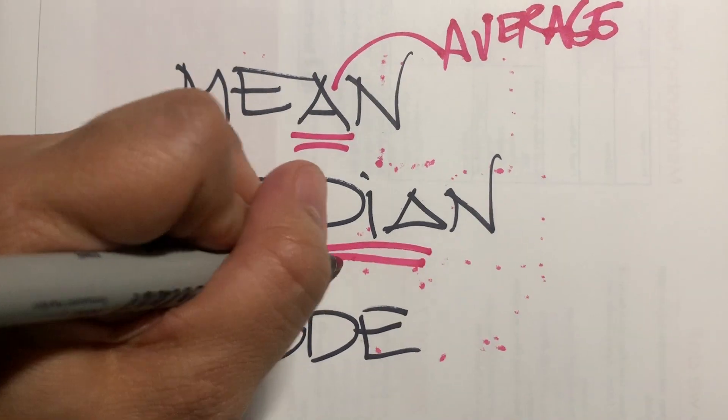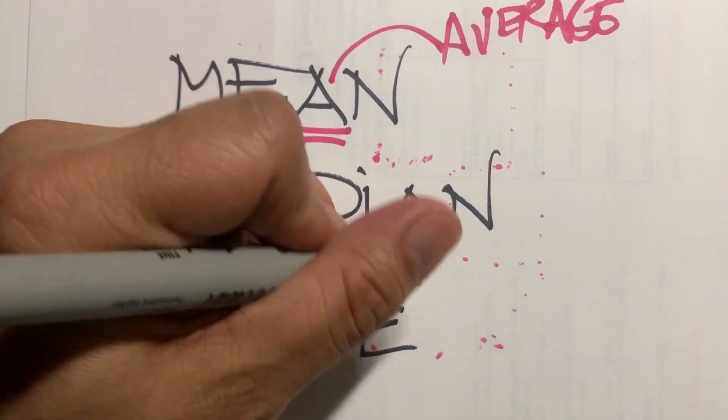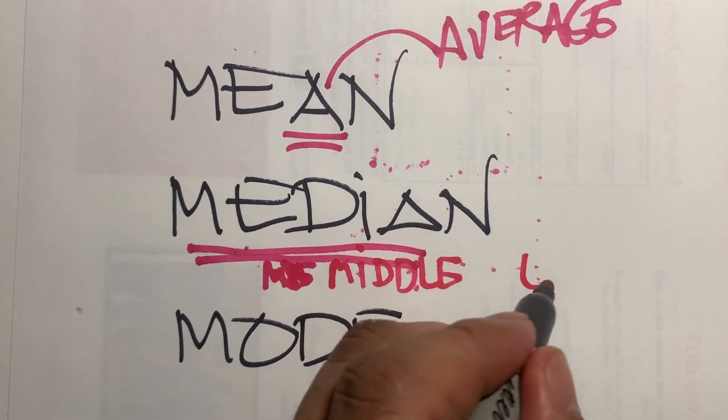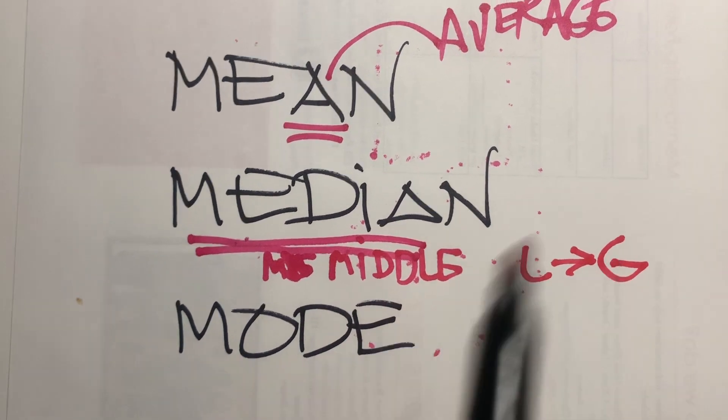Median, from the median, meaning the middle, which is the middle number if you arrange the numbers from least to greatest.